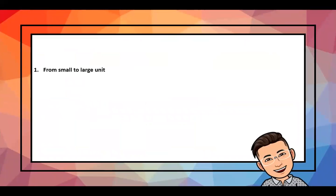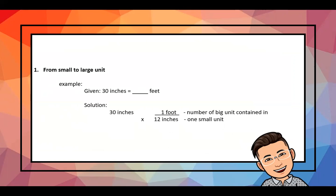To convert from a small unit to a large unit, divide the given number of the small unit by the number of small units contained in one large unit. Example: convert 30 inches to feet. Solution: 30 inches × (1 foot / 12 inches). Cancel inches — 30 × 1 ÷ 12 = 2.5 feet.